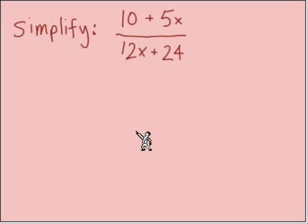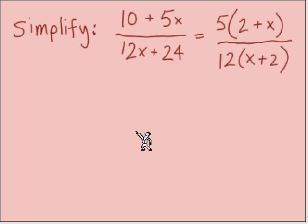Next simplify 10 plus 5x over 12x plus 24. This is a good one for you to pause, take a couple minutes and work this one. 10 plus 5x, let's factor the numerator first. From the numerator we have a 5 we can bring out, left over in parentheses 2 plus x and we cannot factor that binomial any further. In the denominator, 12 is our GCF with x plus 2.